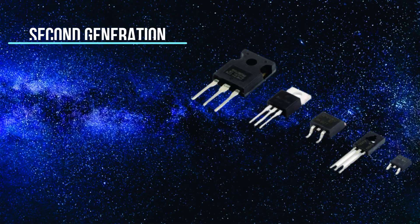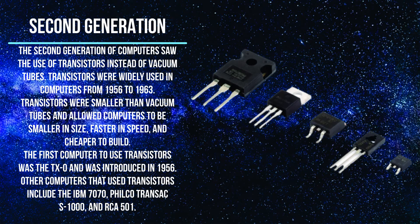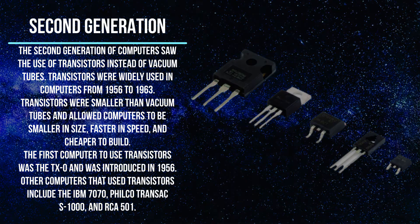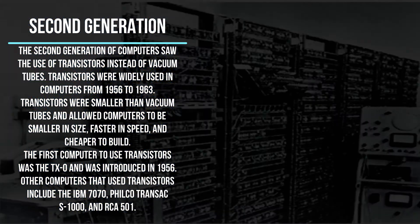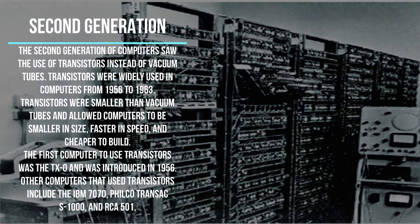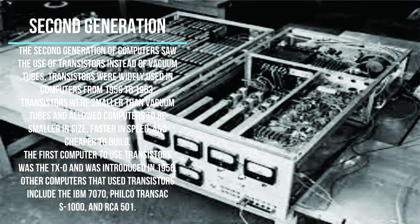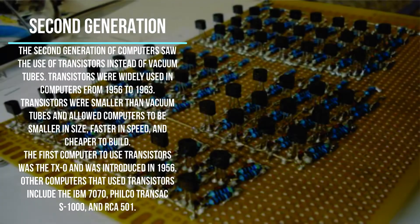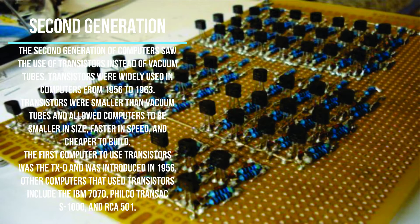The second generation of computers saw the use of transistors instead of vacuum tubes. Transistors were widely used in computers from 1956 to 1963. Transistors were smaller than vacuum tubes and allowed computers to be smaller in size, faster in speed, and cheaper to build. The first computer to use transistors was the TX0, introduced in 1956.